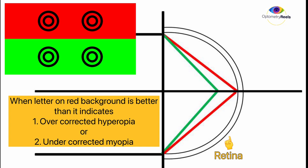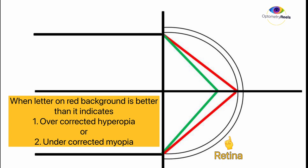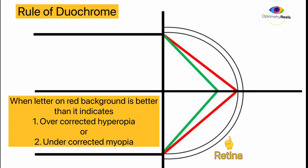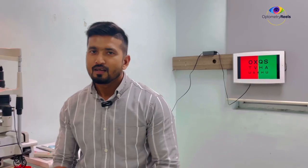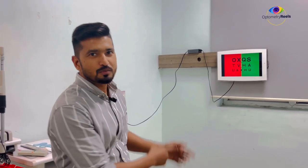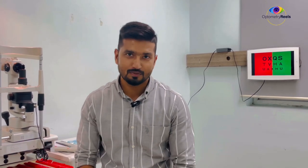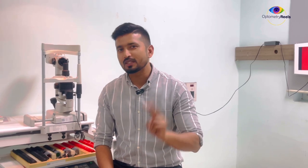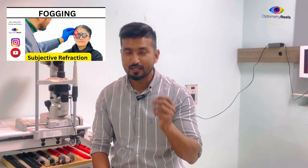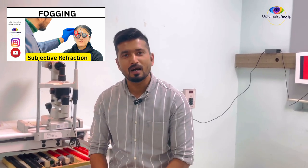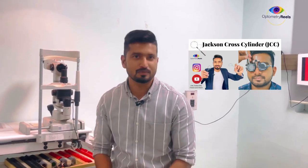Many literature sources support that myopia should be undercorrected and hyperopia should be overcorrected — meaning minimum minus for myopia and maximum plus for hyperopia should be given. However, as per recent literature, the letters on the red and green backgrounds of the Duochrome chart should be equally clear and sharp for optimum refraction. This test can be performed at two points during refraction: after best vision sphere before JCC, or after JCC to finalize your refraction.